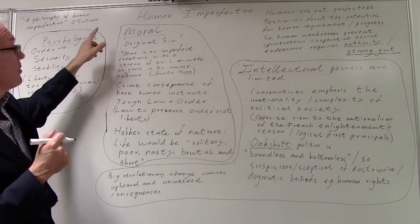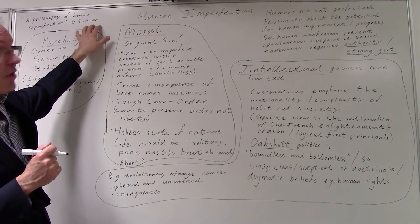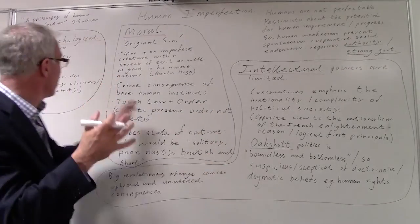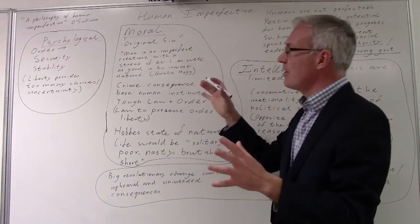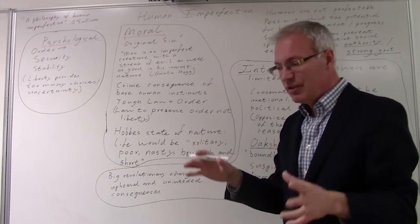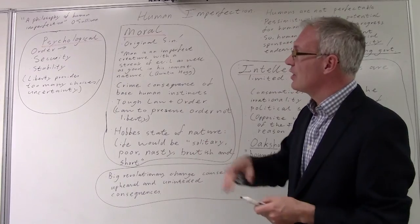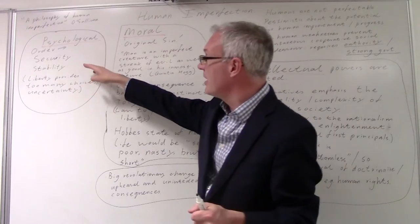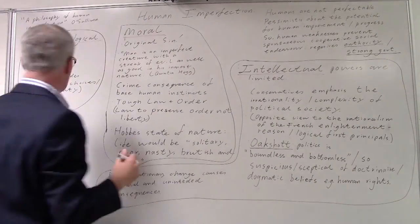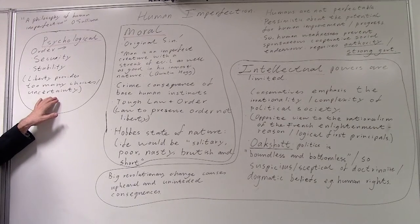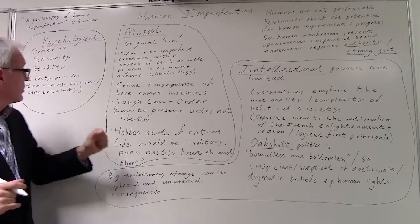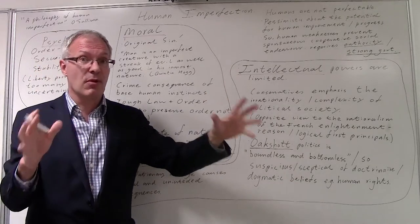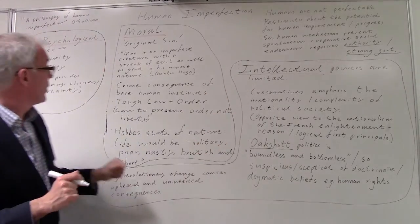O'Sullivan argues that conservatism is a philosophy of human imperfection. Psychologically, conservatives emphasize the need for order, the need for tradition, the need for security. Because people are psychologically weak, they're not perfect, and they need stability. Indeed, liberty provides too many choices and too much uncertainty for individuals. Therefore they require authority, they require certainty, through tradition perhaps.